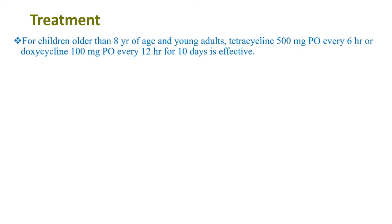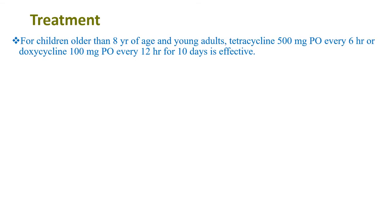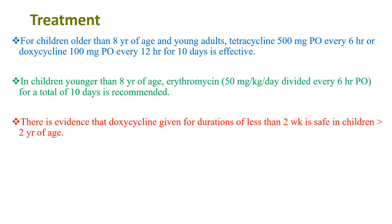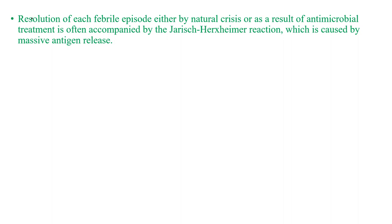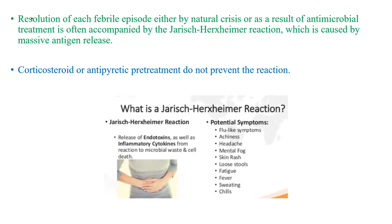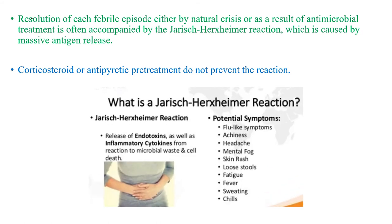Regarding treatment of relapsing fever, for children older than 8 years of age and young adults, tetracycline or doxycycline for 10 days can be given. For children younger than 8 years of age, erythromycin is recommended for 10 days. Since there is evidence that doxycycline given for less than 2 weeks is safe in children more than 2 years of age, doxycycline can also be given for those more than 2 years of age. Penicillin and chloramphenicol are also effective. Resolution of each febrile episode — either by natural crisis or antimicrobial treatment — is often accompanied by a Jarisch-Herxheimer reaction (JHR), which is caused by massive antigen release. Corticosteroids or antipyretic pretreatment do not prevent the reaction. This JHR is a release of endotoxins as well as inflammatory cytokines from reaction to microbial death and cell lysis.